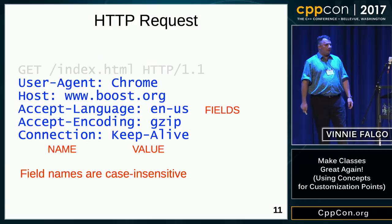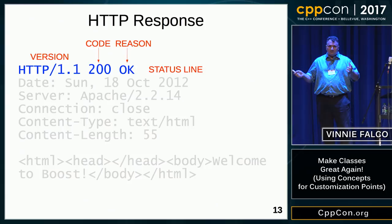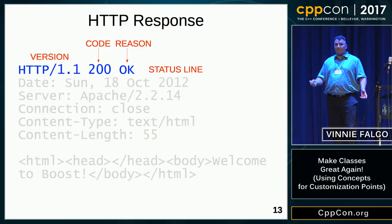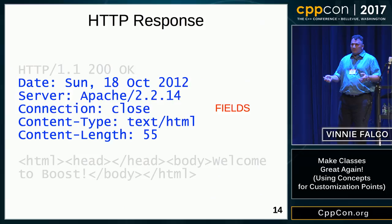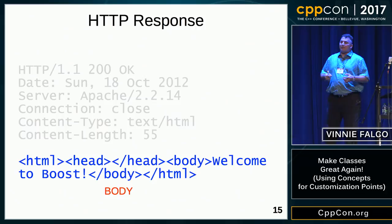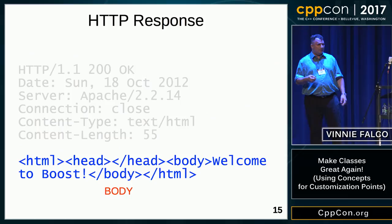A response looks very similar — again, it's text. The first line is called the status line; it has the version and a numerical code. 200 means OK, 404 means not found, 500 means server error. There's also a human-readable text that mirrors the error code for debugging. After the status line, we have fields — name-value pairs. Any HTTP message can have an optional body; this one contains some HTML, but it could be binary or absent depending on the semantics.